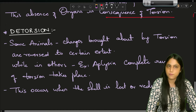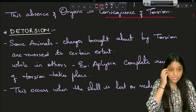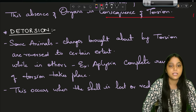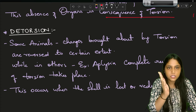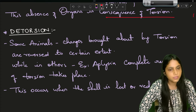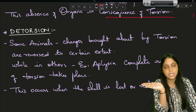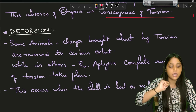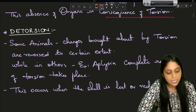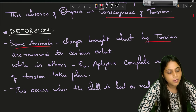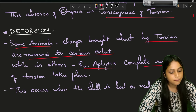Now let us talk about detorsion. From the name detorsion we get the idea that it reverses the effects of torsion. Before torsion the organism was in one orientation, after torsion it changed, and detorsion reverses that. In some animals, changes brought about by torsion are reversed to a certain extent, while in others a complete reversion of torsion takes place.